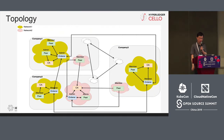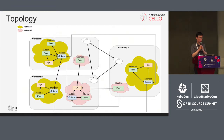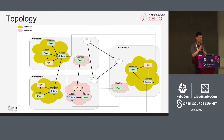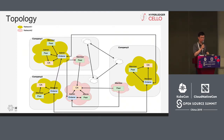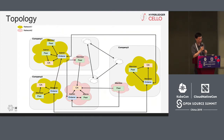About Cello's key features — here you can see the conceptual topology chart. There are numerous companies, each an independent organization. Within each company, they can deploy different Hyperledger Fabric networks. The yellow part refers to one Hyperledger Fabric network, the pink is another, and also a smaller one in white. Hyperledger Cello can help with the management and distributed deployment of these fabric networks.